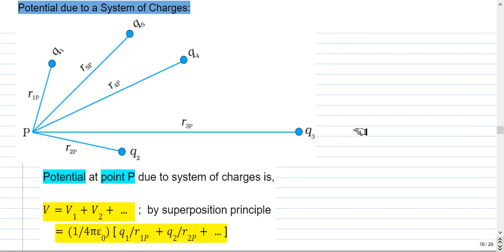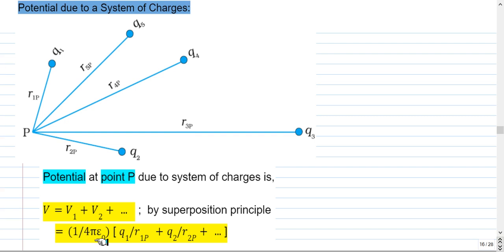For a system of point charges — say five point charges q₁, q₂, q₃, q₄, q₅ at various distances — to find the potential at a general point P, we use the superposition principle. The potential at P due to all charges is the sum of potentials due to individual charges. Potential at P due to charge 1 is (1/4πε₀)·q₁/r₁P, due to charge 2 is q₂/r₂P, and so on. This can be generalized for n point charges.